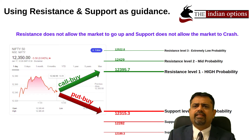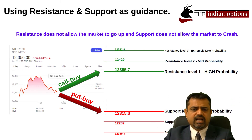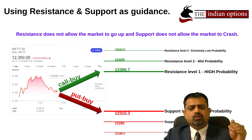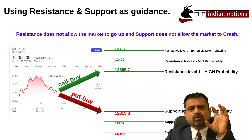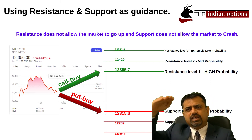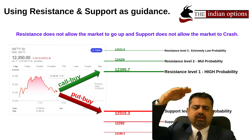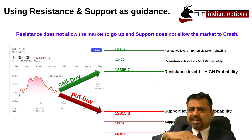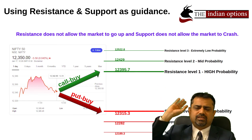Now what traders do — in this example, at 12:32 in the afternoon the market was at 12,350. From this point, if the market goes above, the first resistance level is 12,395, the second resistance level is 12,429, and the third resistance is 12,522. These resistance levels are calculated automatically using complex formulas — don't worry about how they are made, just know that these levels exist.